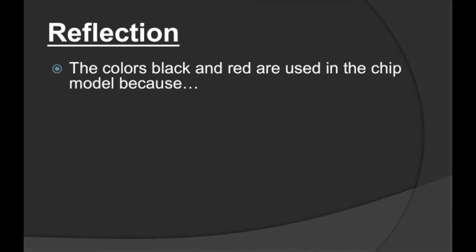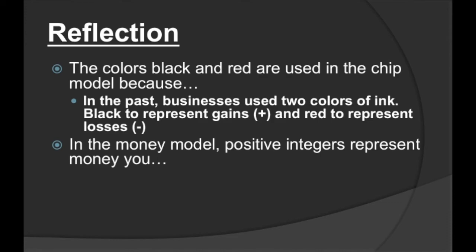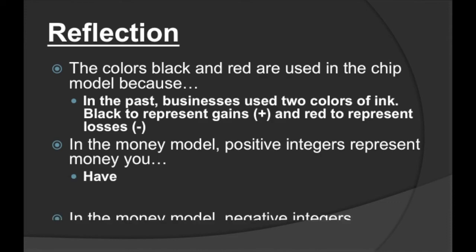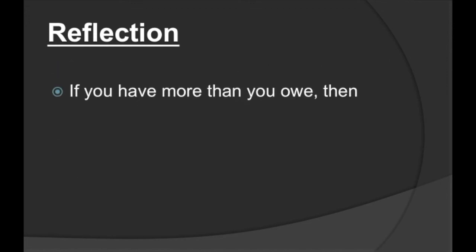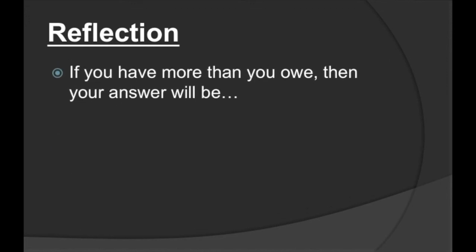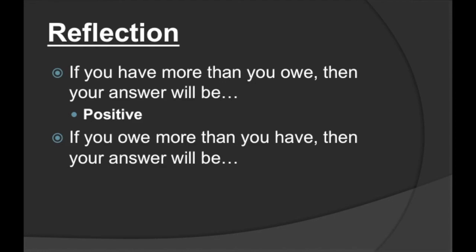The colors black and red are used in the chip model because, in the past, businesses used two colors of ink — black was used to represent gains, and red was used to represent losses. In the money model, positive integers represent money you have, and negative integers represent money you owe. If you have more than you owe, your answer will be positive. If you owe more than you have, you can't pay back everything, which means you will still owe — and therefore you will have a negative answer.